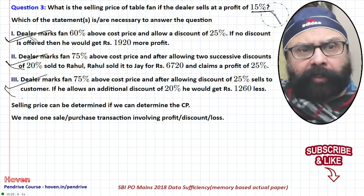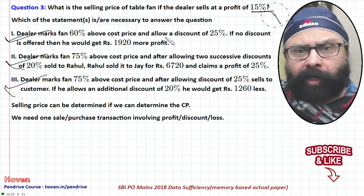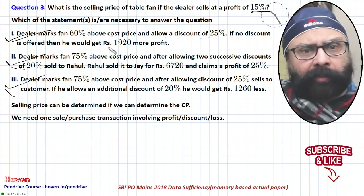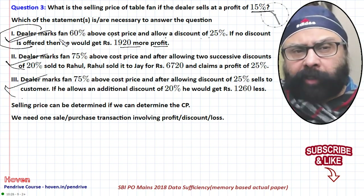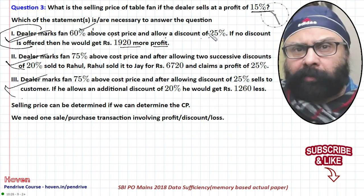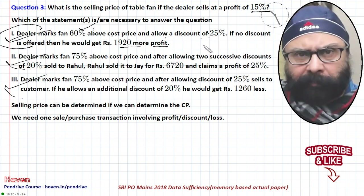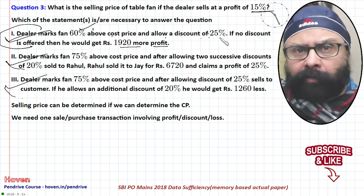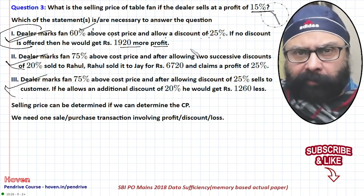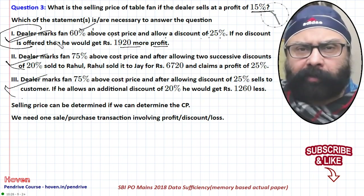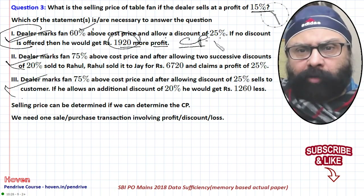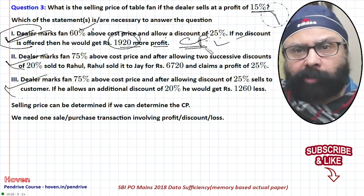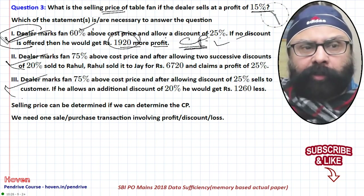Statement 1 says the dealer marks the fan 60 percent above cost price and allows a discount of 25 percent, and if no discount is offered he would get Rs. 1,920 more profit. Starting with cost price = 100, mark price = 160, apply the discount, calculate profit both ways, take the difference, then apply the unitary method to obtain the actual cost price. So statement 1 alone is sufficient.